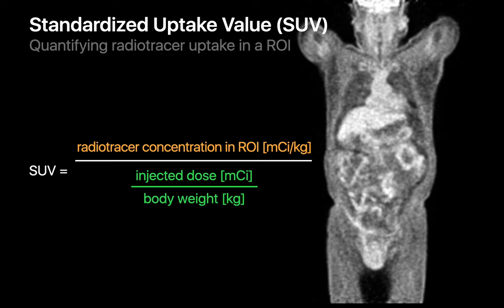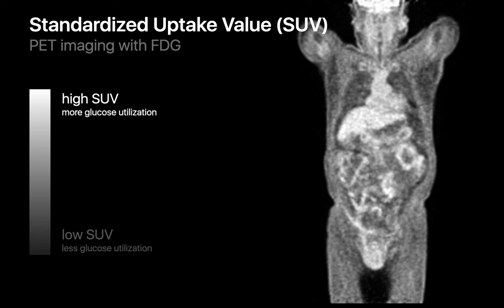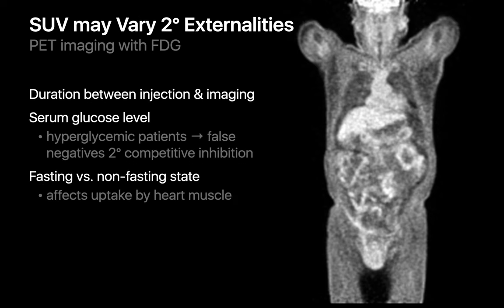If our radiotracer is a glucose analog like FDG, SUV becomes a proxy for glucose utilization. The ability to see the distribution of glucose utilization throughout the body can be quite helpful clinically, since many malignancies and infections are associated with abnormally elevated rates of cellular glucose utilization. When it comes to PET imaging with a glucose decoy like FDG, SUV values may be influenced by externalities such as the amount of time that elapsed between FDG injection and PET imaging, the patient's serum glucose level, and the patient's fasting state.